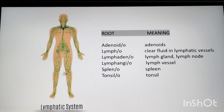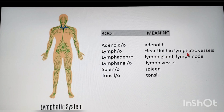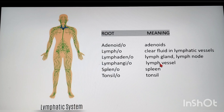This is the lymphatic system. Root words: adenoido — adenoids/lymph gland or lymph node (adenoid means gland); lympho — lymph, meaning clear fluid in lymphatic vessels; angio — vessel; spleeno — spleen; tonsillo — tonsil.